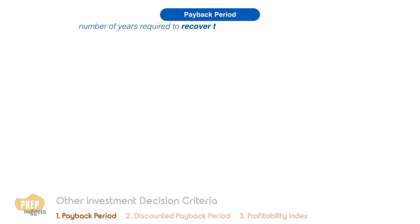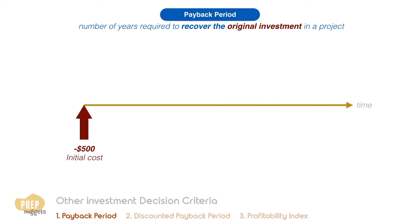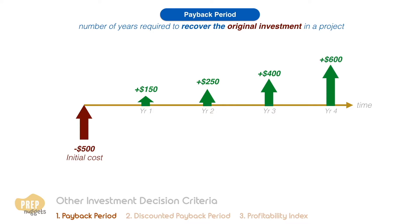The payback period is the number of years required to recover the original investment in a project. For example, the initial cost of a project is $500 and the returns are $150 in the first year, $250 in the second, $400 in the third, and a final $600 in the fourth year. To find the payback period we calculate the cumulative net cash flow for each period.